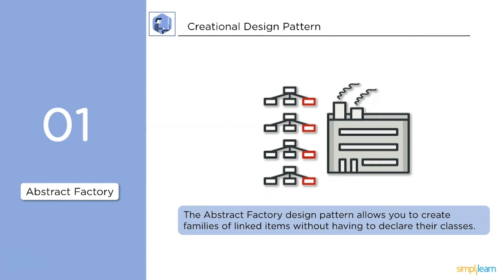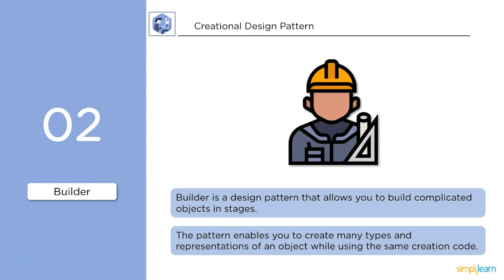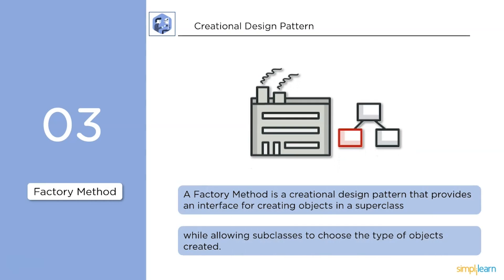The abstract factory design pattern allows you to create families of linked items without having to declare their classes. The builder pattern allows you to build complicated objects in stages, enabling you to create many types of representations of an object using the same creation code. A factory method is a creational design pattern that provides an interface for creating objects in a superclass while allowing subclasses to choose the type of object created.